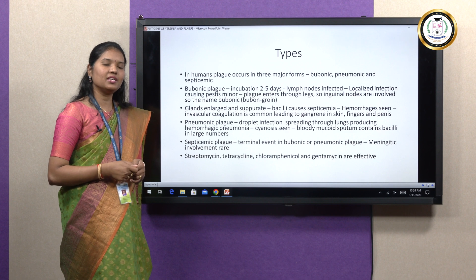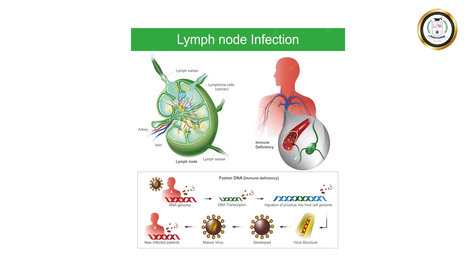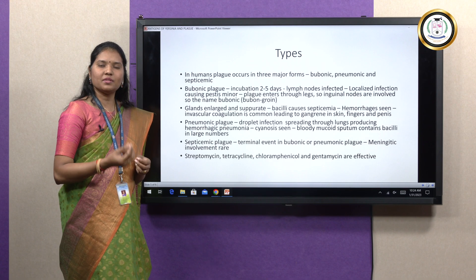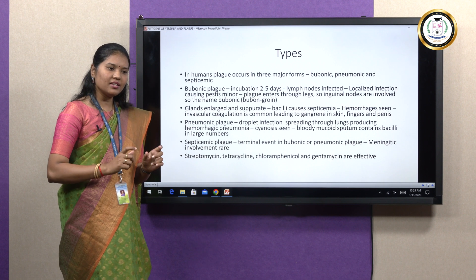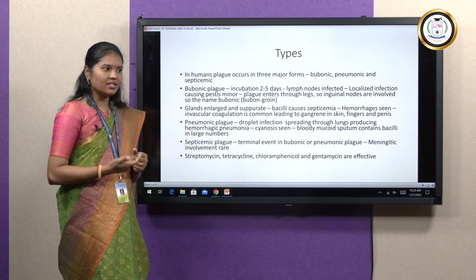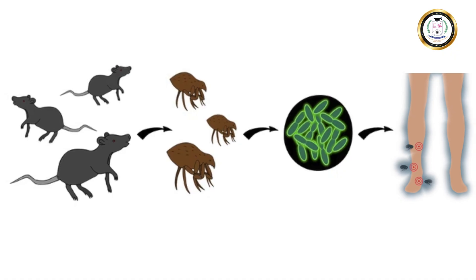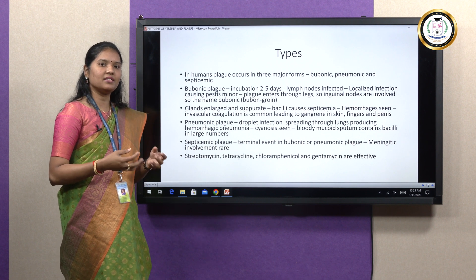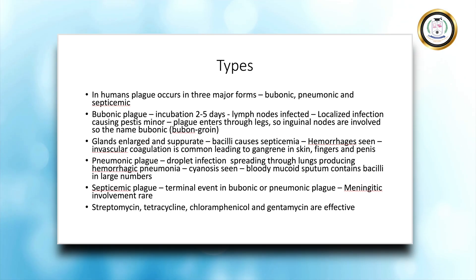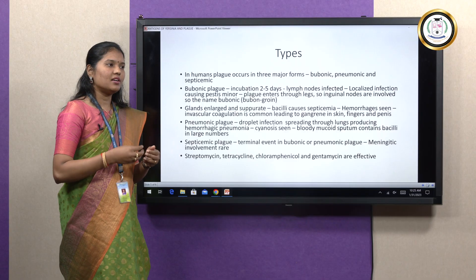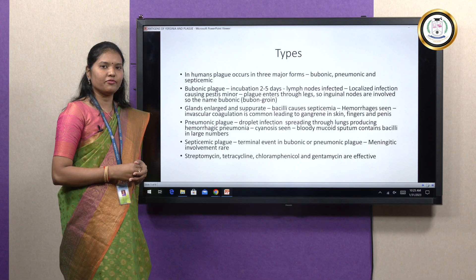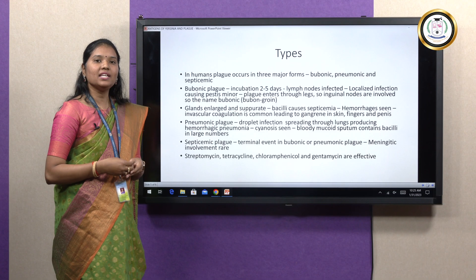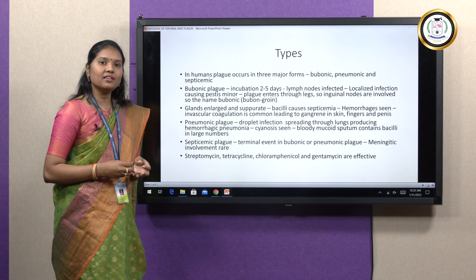Lymph nodes are bean-like organs present in the immune system, and they start to get infected at the site of entry of the bacilli. In certain conditions only minor symptoms are produced, a condition called pestis minor, when the organism is confined to the site of entry. Since rat fleas generally bite humans in their legs, the inguinal lymph nodes are involved in infection. Inguinal lymph nodes are present in the groin region, which is why this type is called bubonic plague — bubon means groin. After infection of the inguinal lymph nodes, the bacilli enter the blood causing bacteremia, then hemorrhages and intravascular coagulation, leading to gangrene of the skin, fingers, and penis.